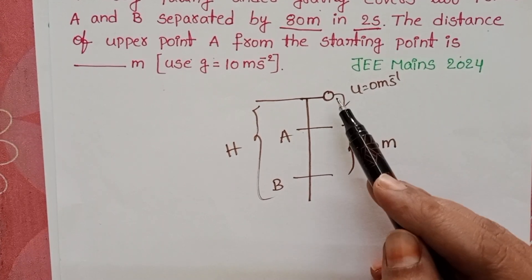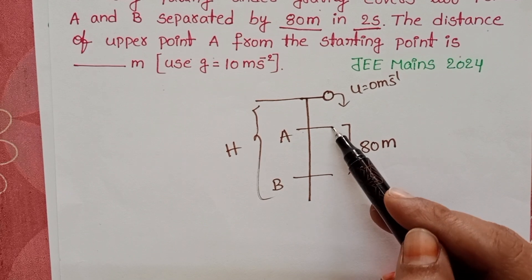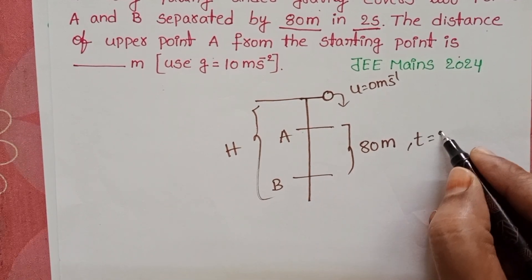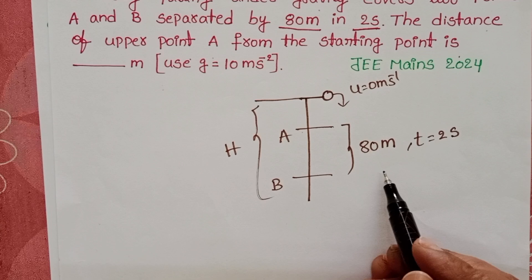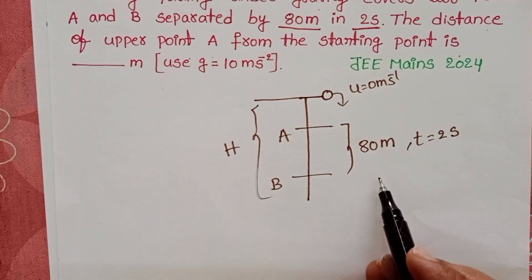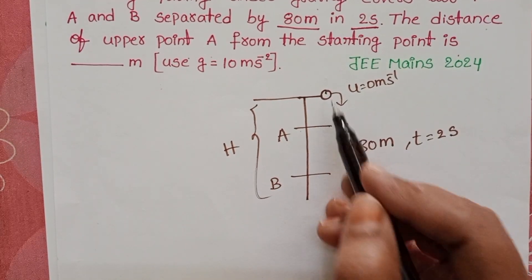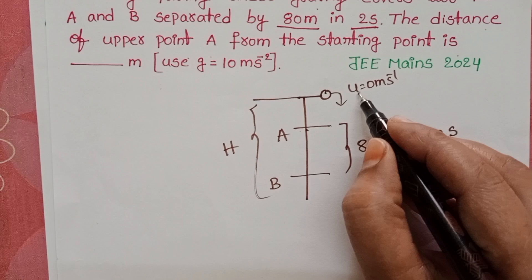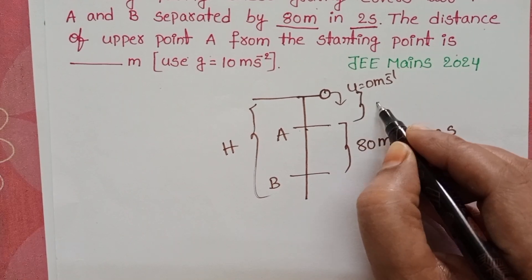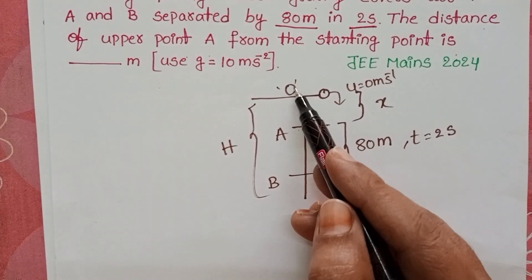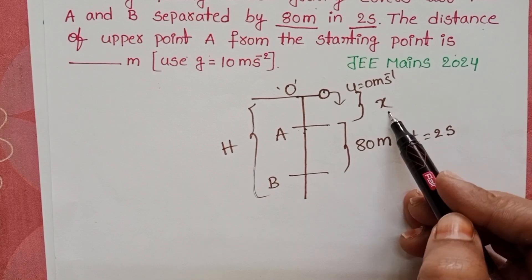This body covers these two points from A to B within the time 2 seconds. By using this information we have to find out the distance from starting point to point A. Let us take this distance is X and take this point is O. O to A distance equals X.